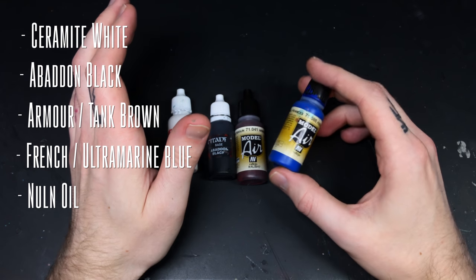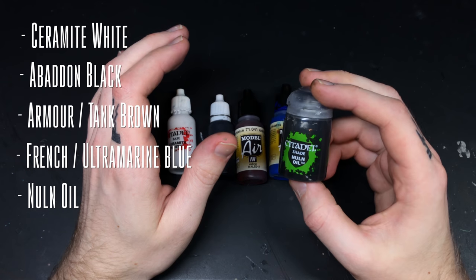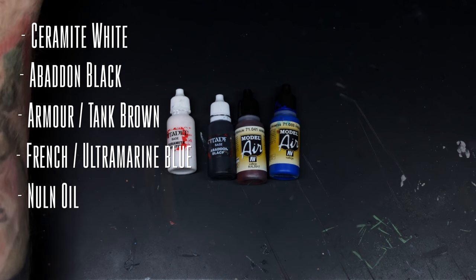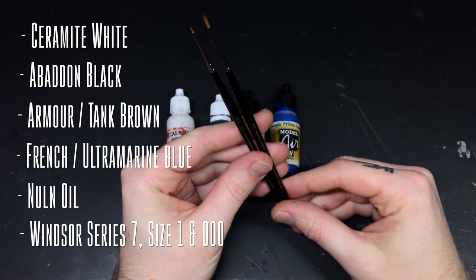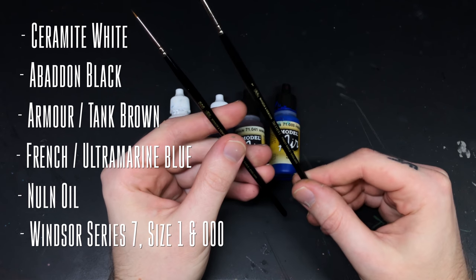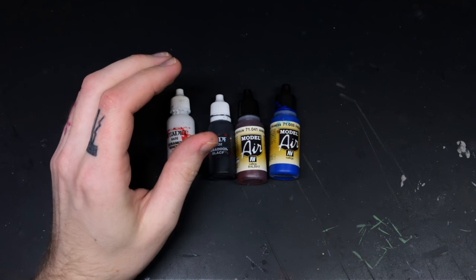I'm also going to use Windsor & Newton Series 7 brushes, both size 1 and triple 0. You don't have to use Series 7 brushes if you have a brush that you really like, or if you have another good Kolinsky sable brush from another brand.